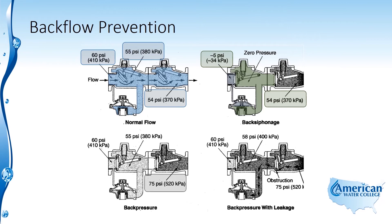Next we have a back pressure situation where the system connected to the public system increases its pressure for some reason. You can see it's 75 psi as opposed to the 60 psi being supplied. In this case, the check valve will close and not allow flow back into the system.